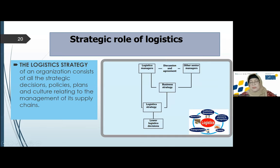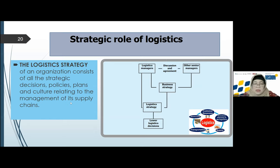As a function, we must support business strategy. And the logistics manager must also have discussions with higher managers, because logistics covers the entire corporation — not only one business, but sometimes servicing more than one company. The logistics strategy of an organization consists of all the strategic decisions, policies, plans, and culture relating to management of the supply chain. Culture in Indonesia is different from Malaysia, China, and Hong Kong — and also customs and tax differ. In global logistics, it is very complicated.